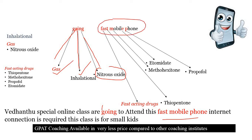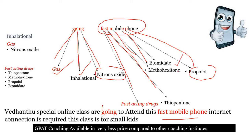From 'we require FAST MOBILE PHONE': F indicates Fast-acting drugs, T indicating Thiopentone, E indicating Etomidate, M indicating Methohexitone, and P indicating Propofol. Propofol, etomidate, methohexitone, and thiopentone are general anesthetics that are fast-acting drugs.